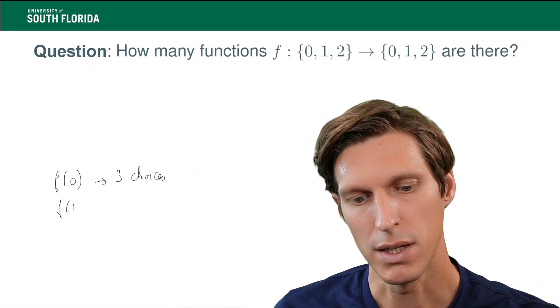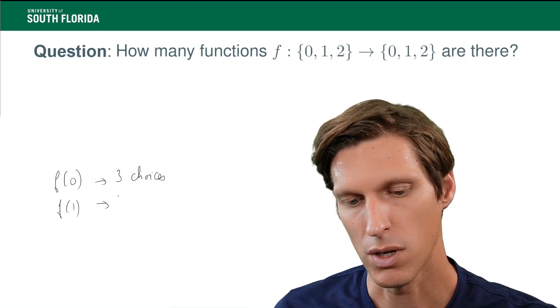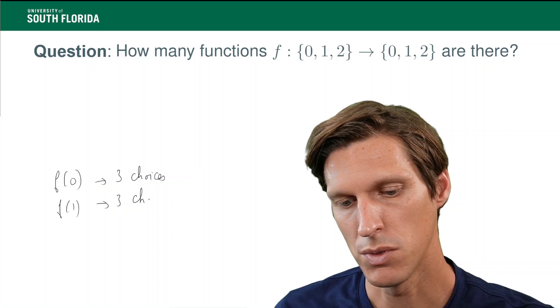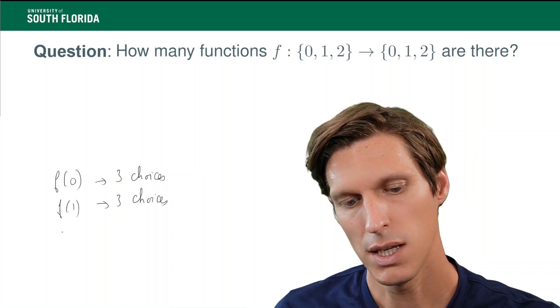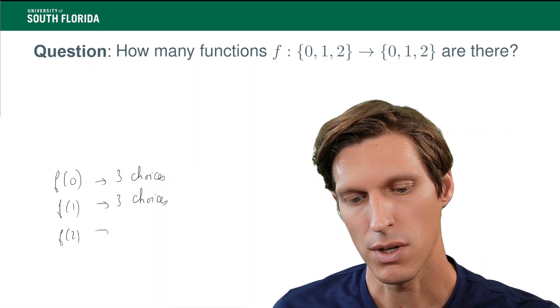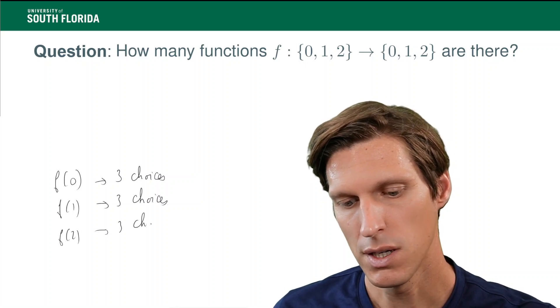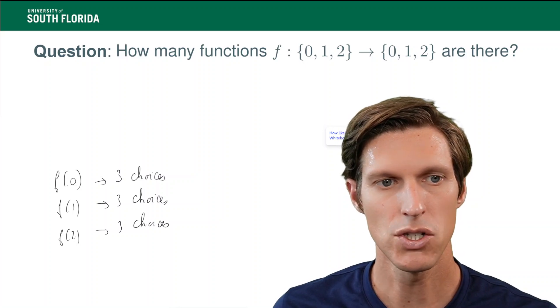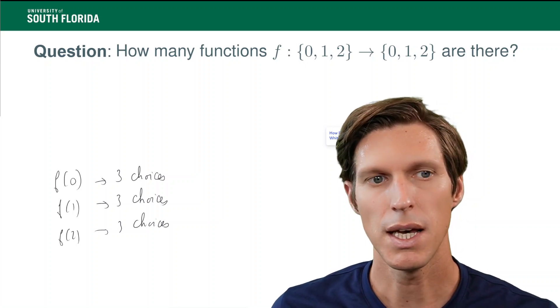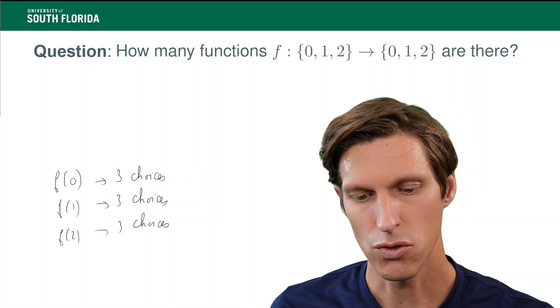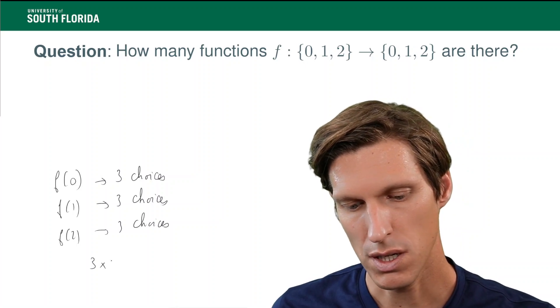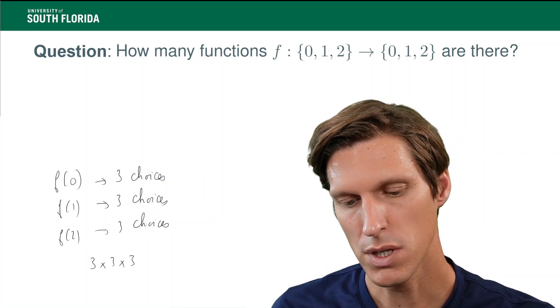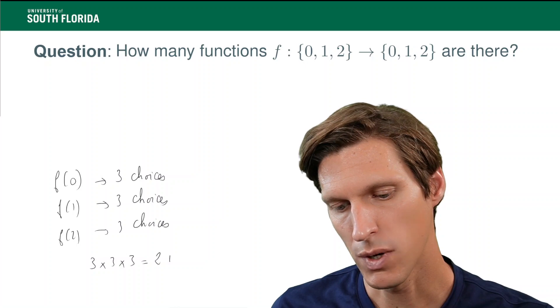And then f of 1, how many choices do I have? Well, three choices as well, right? It could be 0, 1, or 2. And then f of 2, I also have three choices. Now, those choices are all independent, and each of those triplets yields a different function. So, the total number of functions is 3 times 3 times 3 equals 27.